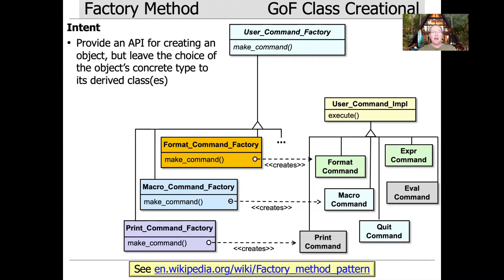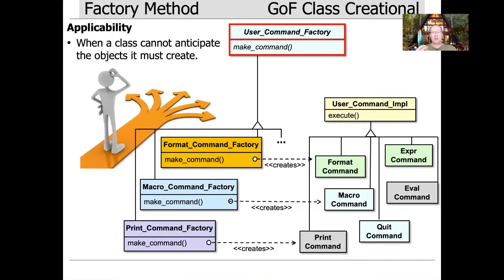The intent of the factory method pattern is to provide an API for creating an object, but leave the choice of the object's concrete type to its derived classes. This is the intent straight out of the Gang of Four book. I don't think that's a very good intent, and I'll explain why later. But let's first talk about what they say, and then we'll talk about a better way to look at it.